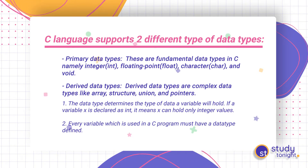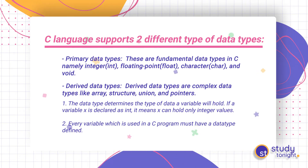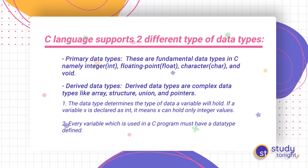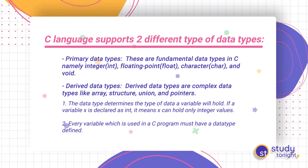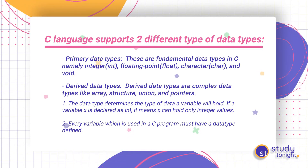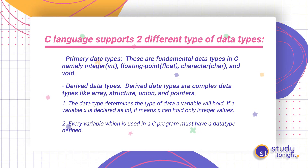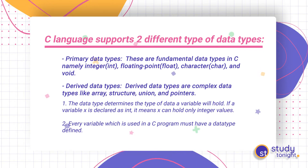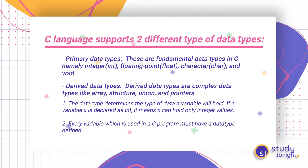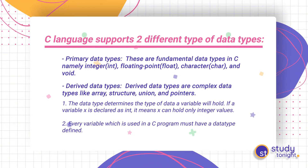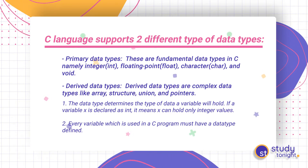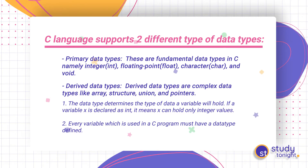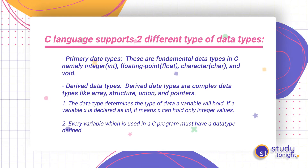We have seen in our programs that we use int with main as well, and we return zero at the end — that is an integral value. So if we use float, then we have to return only float type values. It defines the data type — what kind of data we are using in our program.